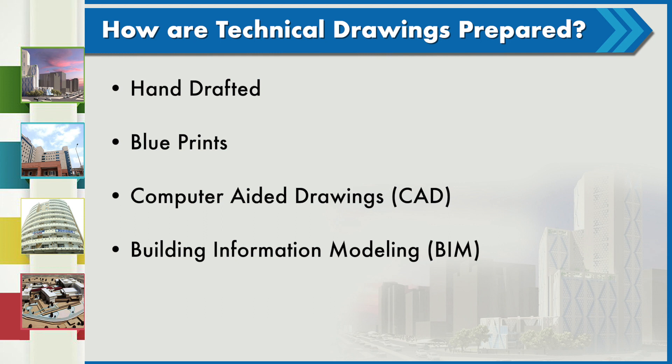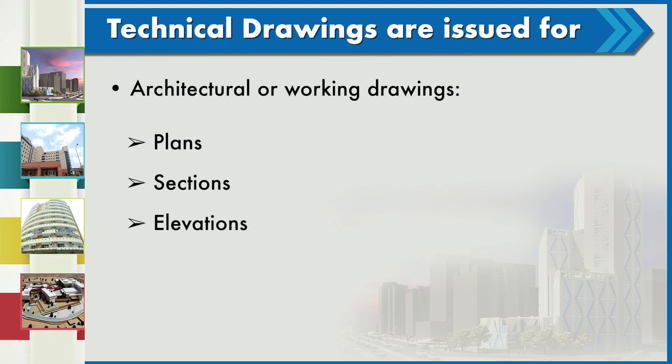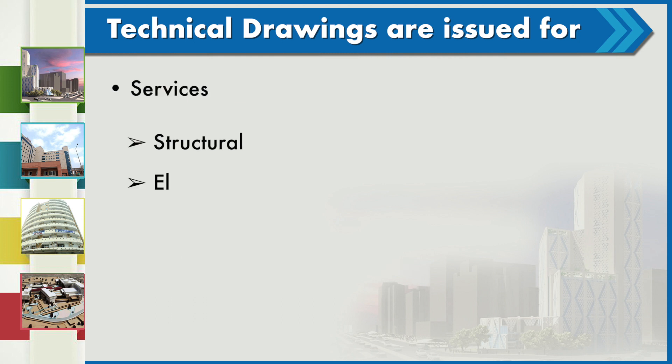Technical drawings can be hand-drafted blueprints, computer-aided drawings (AutoCAD), or Building Information Modeling (BIM). In terms of architectural working drawings, we have plans, sections, elevations, 3D views, and cross-sections. For services, we have structural drawings, electrical drawings, and plumbing drawings.